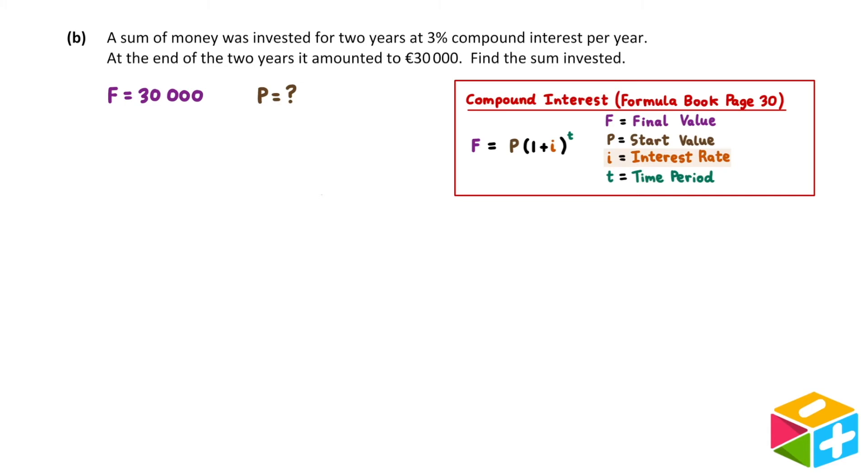I refers to the interest rate, and in our question, interest is compounding at 3% per year. So i is 3%. Written as a decimal, this would be 0.03. T refers to the time period, and our money is invested for two years. So t is equal to 2. Now that we've identified the values for the letters, let's sub into the formula.